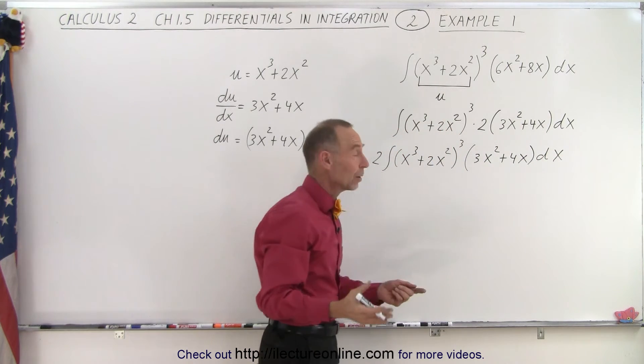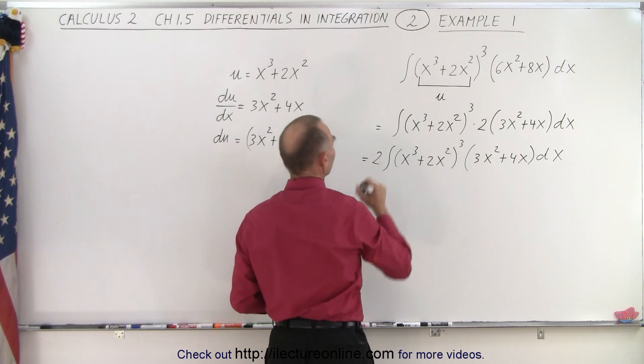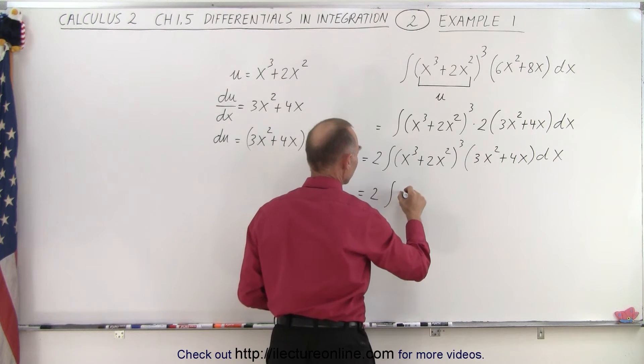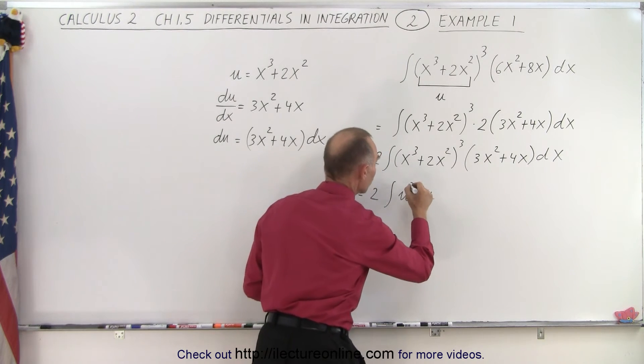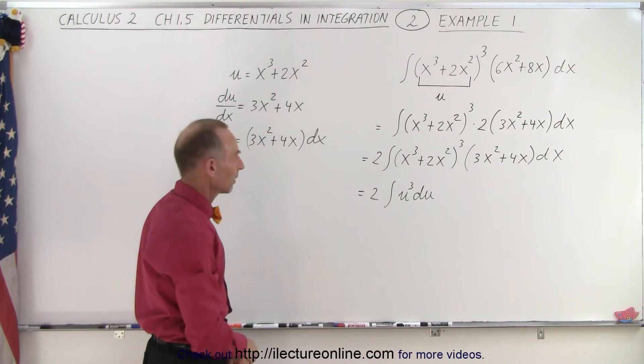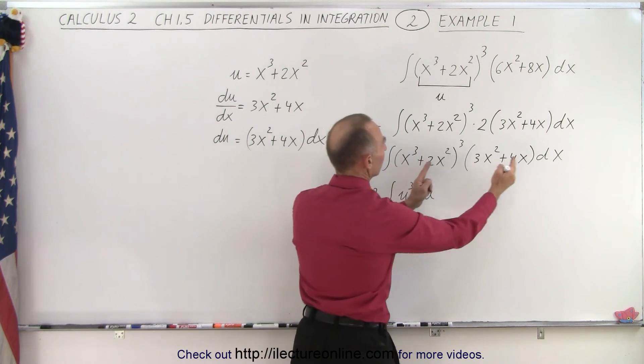And essentially what I have now, this is equal to, and of course I can put equal signs, this is 2 times the integral of u times du. And of course it would be u³. Can't forget the cube there. So essentially that's what I'm dealing with. There's my u³ and there's my du.